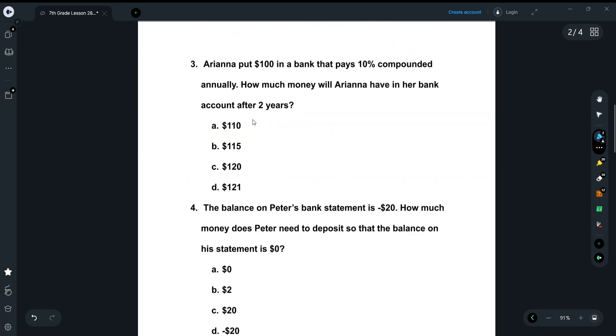Next question, number three. Ariana put $100 in her bank that pays 10% compounded annually. How much money will Ariana have in her bank after two years? So 10%, it says, compounded. So that means it's compounded annually. So every year, it compounds 10% of whatever's in there. So two years.